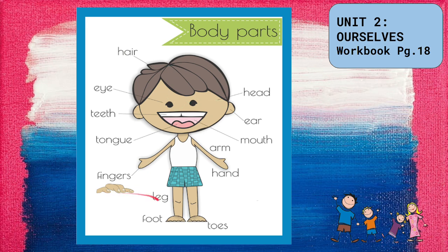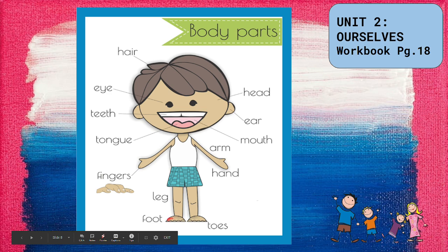How about your leg? How many legs do we have? Two — the right and the left. And how about your foot? We have two feet. If there are two foot, we say feet — the right foot and the left foot. How about your toes? On your foot, or on your feet, we call these toes.